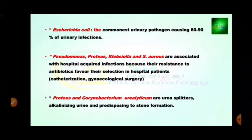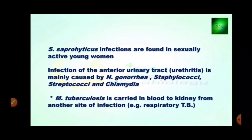E. coli is the most common urinary pathogen, causing 60-90% of urinary tract infections. Pseudomonas, Proteus, Klebsiella, and Serratia are associated with hospital-acquired infections because they are resistant to antibiotics. Proteus and Corynebacterium urealyticum are urea splitters, alkalizing urine and predisposing to stone formation. Staphylococcus infections are found in sexually active young women. Infection of the anterior urinary tract — urethritis — is mainly caused by Neisseria gonorrhoeae, staphylococci, streptococci, and Chlamydia. Mycobacterium tuberculosis is carried in the blood to the kidney from another site of infection, for example respiratory TB.